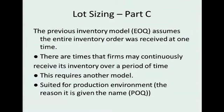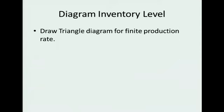The previous EOQ model assumed that the entire inventory was received at one time. There are times where we may continuously receive inventory, such as a machine building up items internally. And this requires another model called the finite production EOQ or POQ. So let's draw this out.